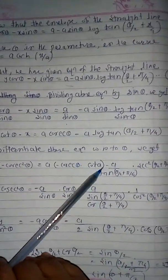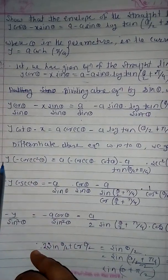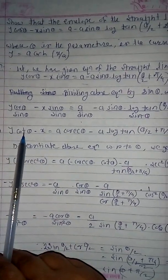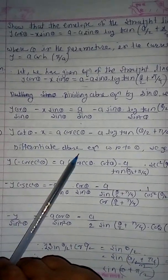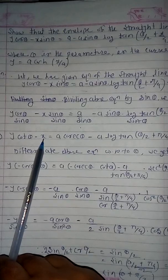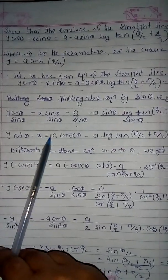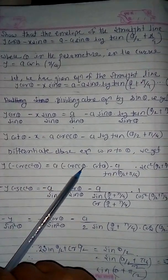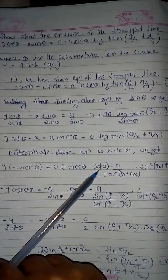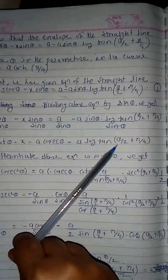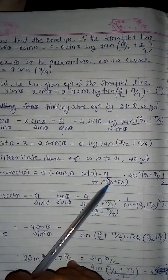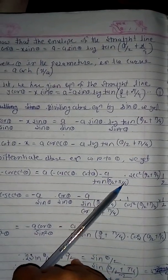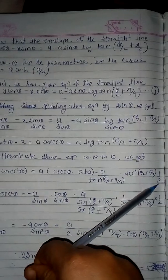Differentiating this equation with respect to θ: the derivative of cot θ is −cosec²θ, and the derivative of x is 0 (since we differentiate with respect to θ). The right side gives a·(−cosec θ·cot θ) minus a times the derivative of log(tan(θ/2 + π/4)), which equals (1/tan(θ/2 + π/4)) · sec²(θ/2 + π/4) · (1/2).